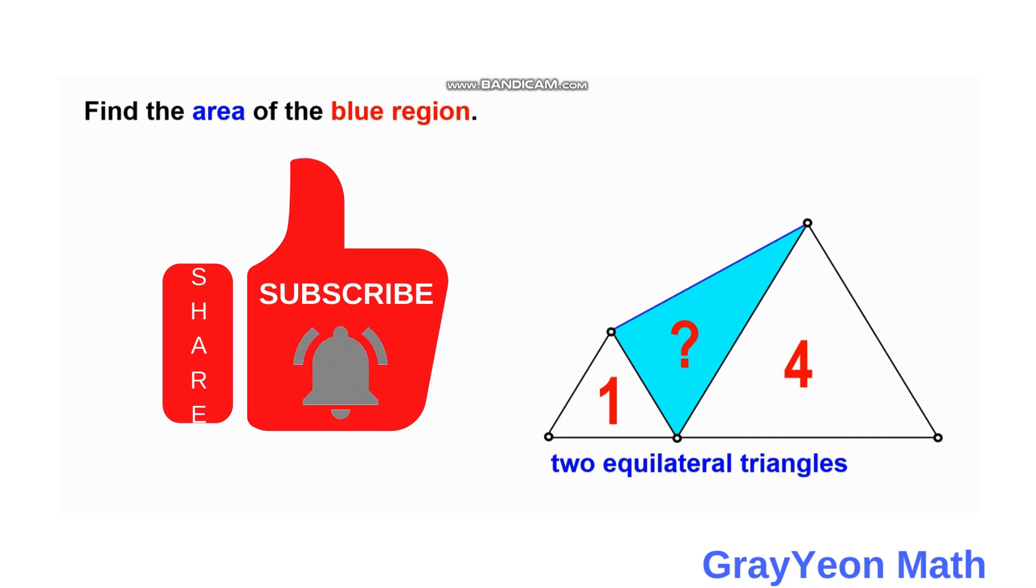Their apexes are connected by this line, and with this blue line along with the two sides of the two triangles, it forms this blue region, which is a triangle. We need to find the area of this blue triangle.